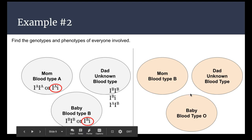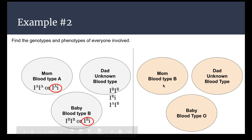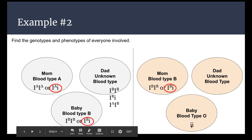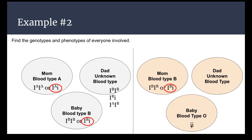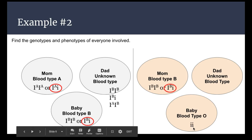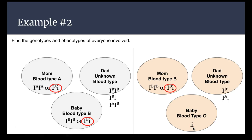For the next hypothetical, mom has type B blood and the baby is type O. The baby must be lowercase i/lowercase i. Looking at mom's options — IB/IB or IB/lowercase i — it can't be IB/IB, because then the baby would have to have at least one IB. So mom's genotype must be IB/lowercase i, and she's passing the lowercase i to the baby. For dad, he must have at least one lowercase i for the baby to get two, so he could be type B (IB/lowercase i), type A (IA/lowercase i), or type O (lowercase i/lowercase i) — multiple possible blood types.